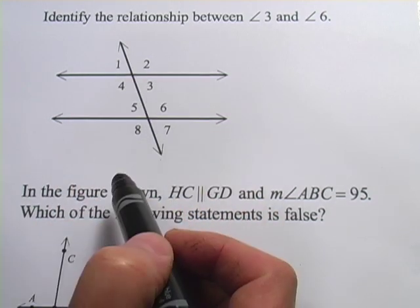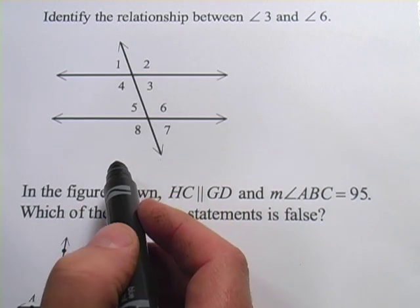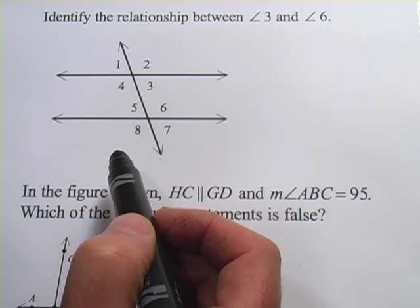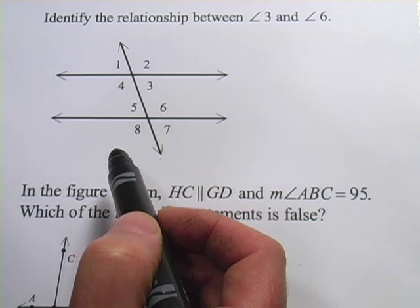And you can see it makes all these different angles, and they've been numbered here, one through eight. Before we get started with these problems, there's some terminology you should know that gets tossed around when dealing with transversals.